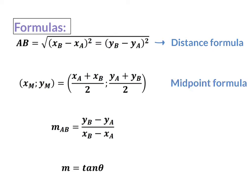Next up, we have our midpoint formula, and this formula helps you to calculate the coordinates of a point that is exactly in the middle of two other points. Next, we have our gradient formula, and this formula calculates the gradient of any line, and we saw that this then forms part of our new formula, which is the inclination angle formula.